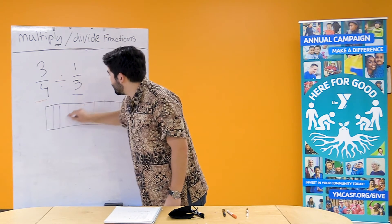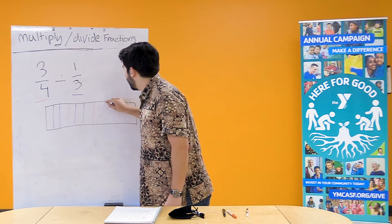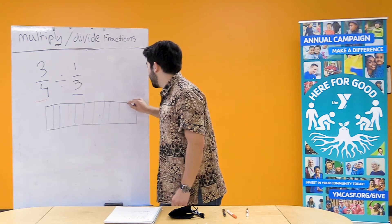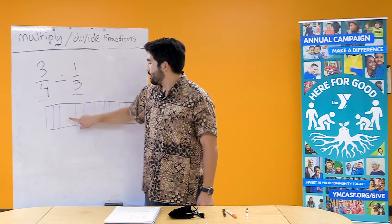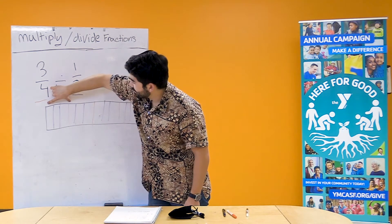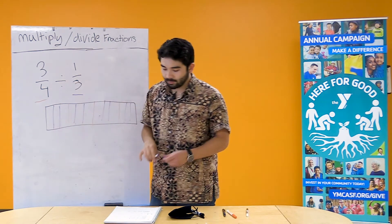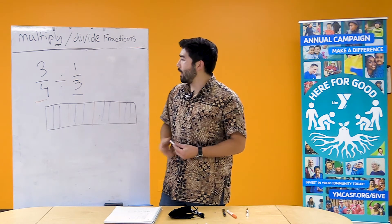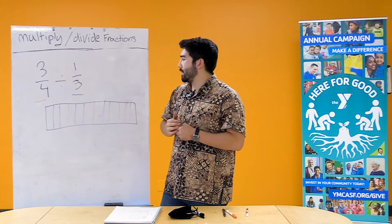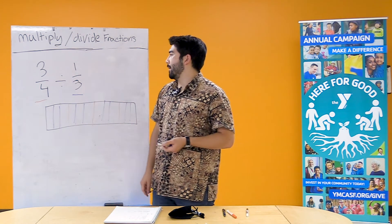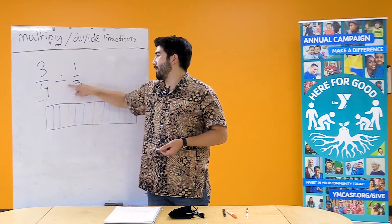Once again what I'm doing is I'm breaking our fourths into thirds. So this box right here represents one fourth and I broke this one fourth into three boxes. So one, two, three. And if we look back at our original problem here we have 3/4 divided by 1/3.